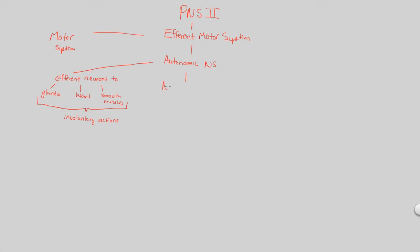The autonomic nervous system contains no receptors — there's no sensation, no reception of sensation — but instead just effectors within this part of the peripheral nervous system. That means there are effectors to muscles and glands, all in an attempt to carry out a specific response, carry out an effect. That's why we have just effectors within the autonomic nervous system.